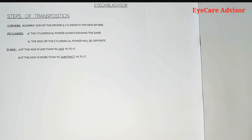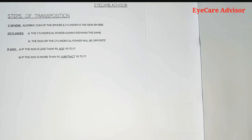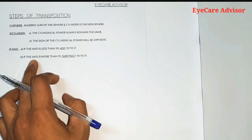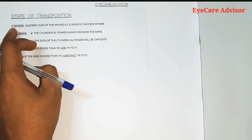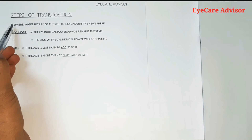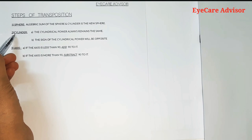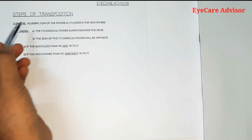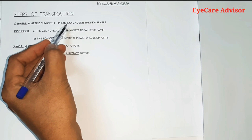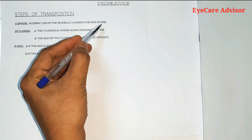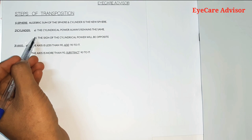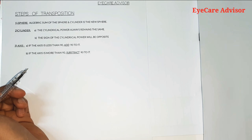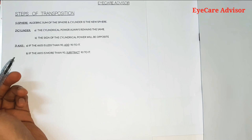Now I will show you the transposition — how to do it. The steps of transposition consist of three parts: number one is the sphere, number two is the cylinder, and number three is the axis. For the sphere, the new sphere is the algebraic sum of the sphere and the cylinder. For the cylinder and for the axis, each is done in two parts.